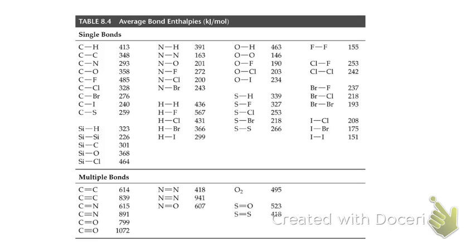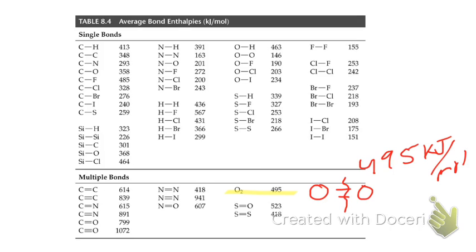I want to point out one bond enthalpy for oxygen in this table. Oxygen, which has a double bond between the two oxygens, is diatomic. If they ask you what is the bond enthalpy for a particular bond, just look at the table. For instance, to break a fluorine-fluorine single bond it would require 155 kilojoules per mole of energy.